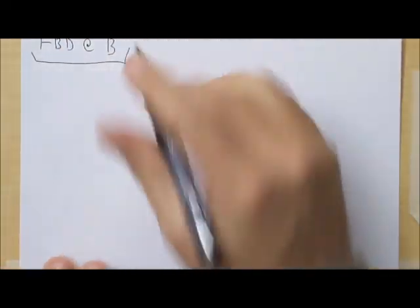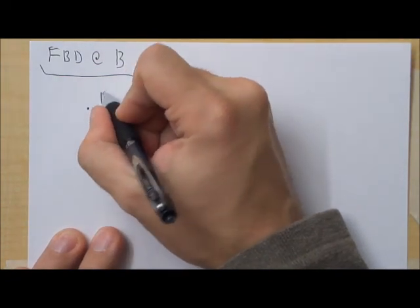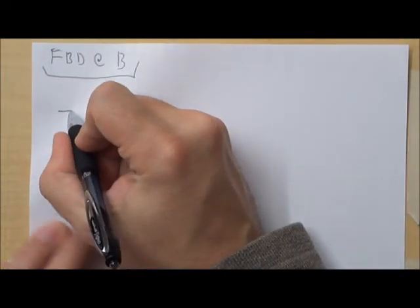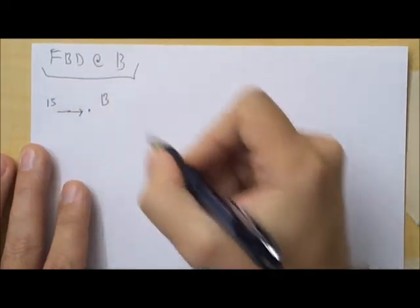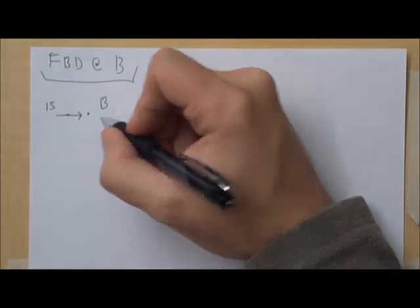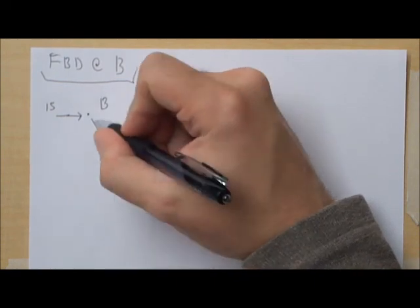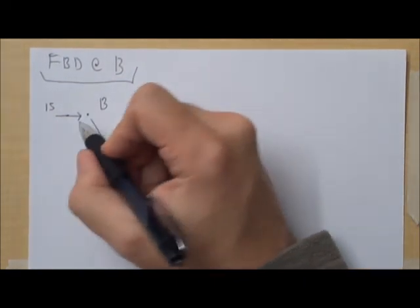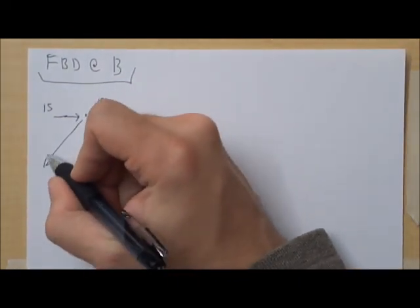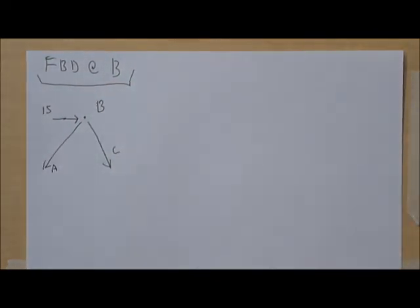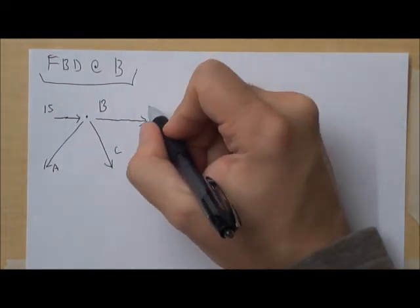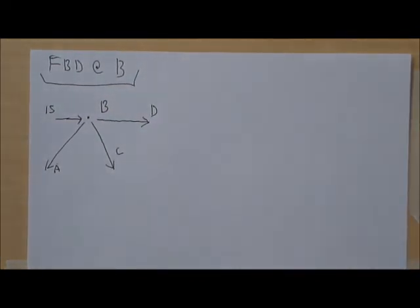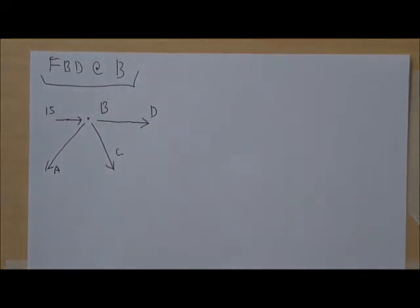So we're going to draw that free body diagram. Here's B. It has this external force of 15 going straight at it. It's going this way as a force vector going towards C. Here's one going towards A. And then there's also one going straight to the right towards D.